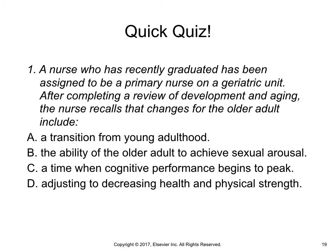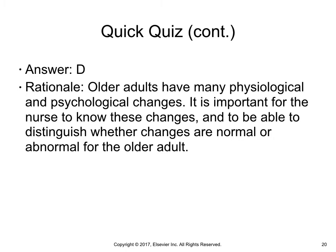Time for a quick quiz. A nurse who has recently graduated has been assigned to be a primary nurse on a geriatric unit. After completing a review of development and aging, the nurse recalls that changes for the older adult include: a) a transition from young adulthood, b) the ability of the older adult to achieve sexual arousal, c) a time when cognitive performance begins to peak, or d) adjusting to decreasing health and physical strength. The answer is d. Older adults have many physiological and psychological changes. It is important for the nurse to know these changes and to be able to distinguish whether changes are normal or abnormal for the older adult.